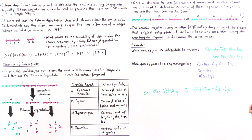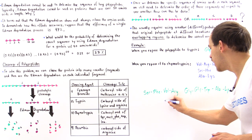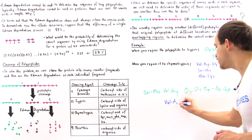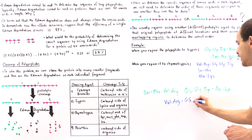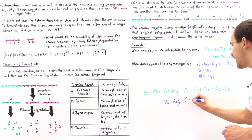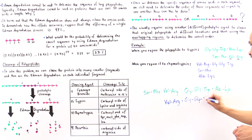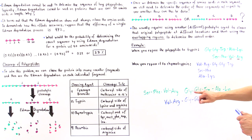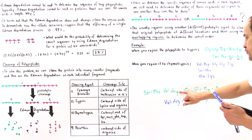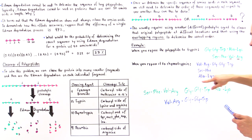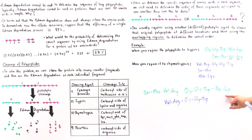Looking at the overlap: valine-arginine appears in the trypsin fragment, and this same sequence appears at the end of the chymotrypsin fragment. Continuing past arginine in the chymotrypsin data, we see glycine, glycine, tryptophan. This matches the beginning of the second trypsin fragment. So these overlapping regions tell us there should be a bond connecting arginine and glycine. By using these overlapping regions, we can determine where the two fragments go.